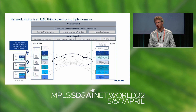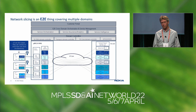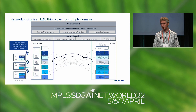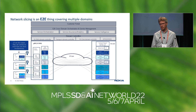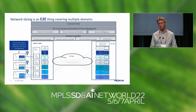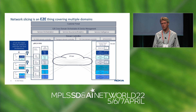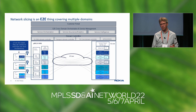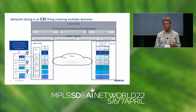When looking at network slicing, it is clear that we need to view it from an end-to-end perspective — not only the RAN and the core, but also the transport part. Crucially, you need to glue all of these pieces together, because how a RAN recognizes a slice is different from how the transport network handles that slice, so some kind of mapping is needed.